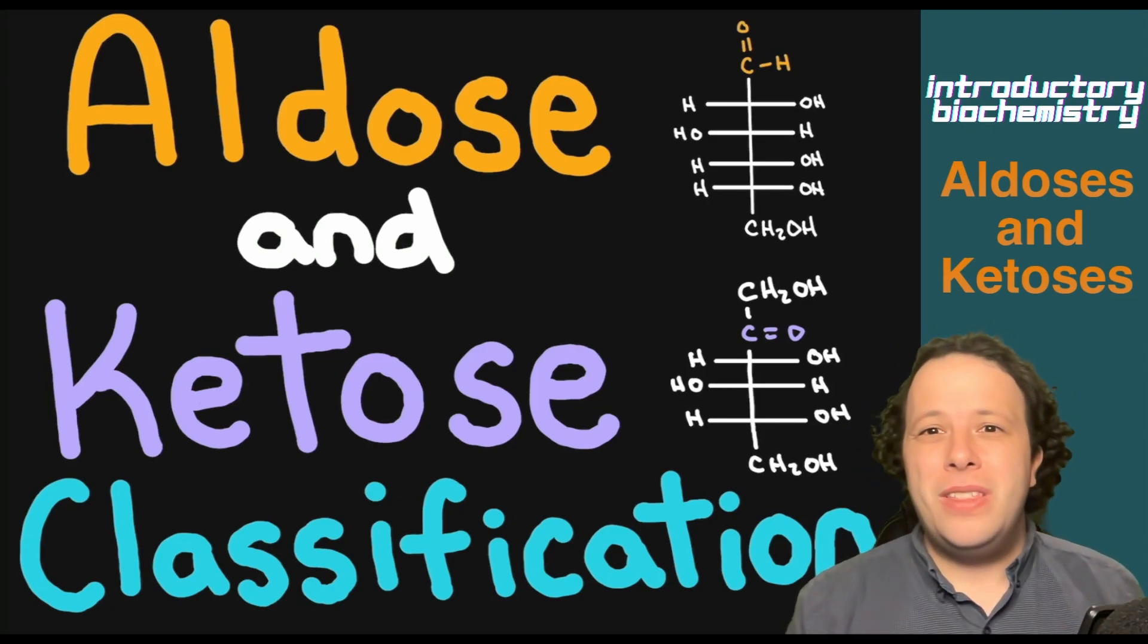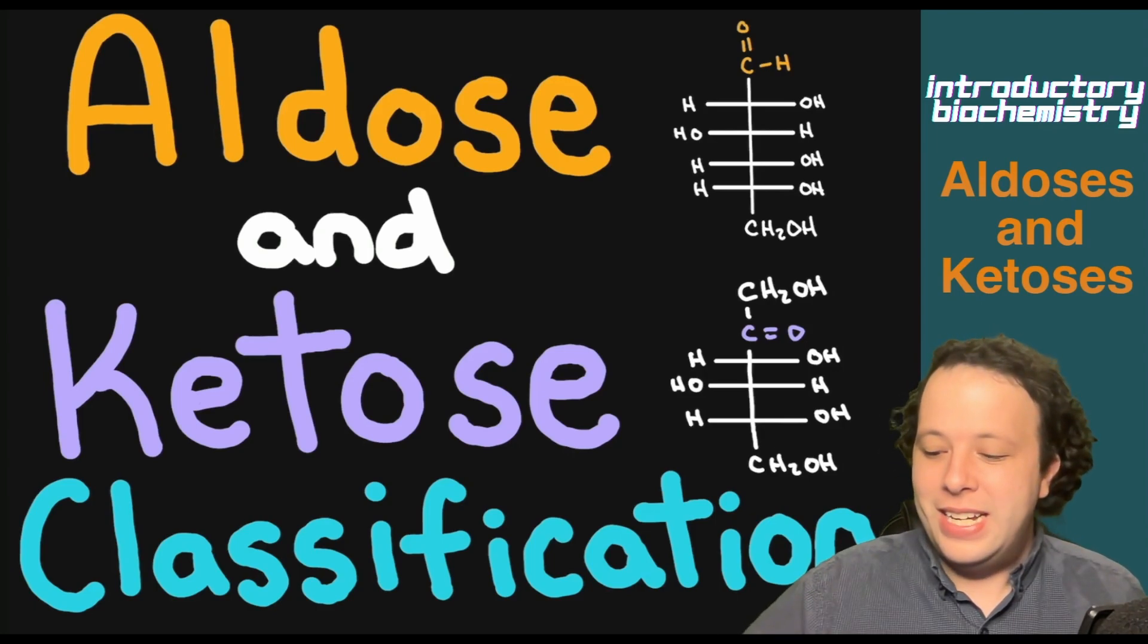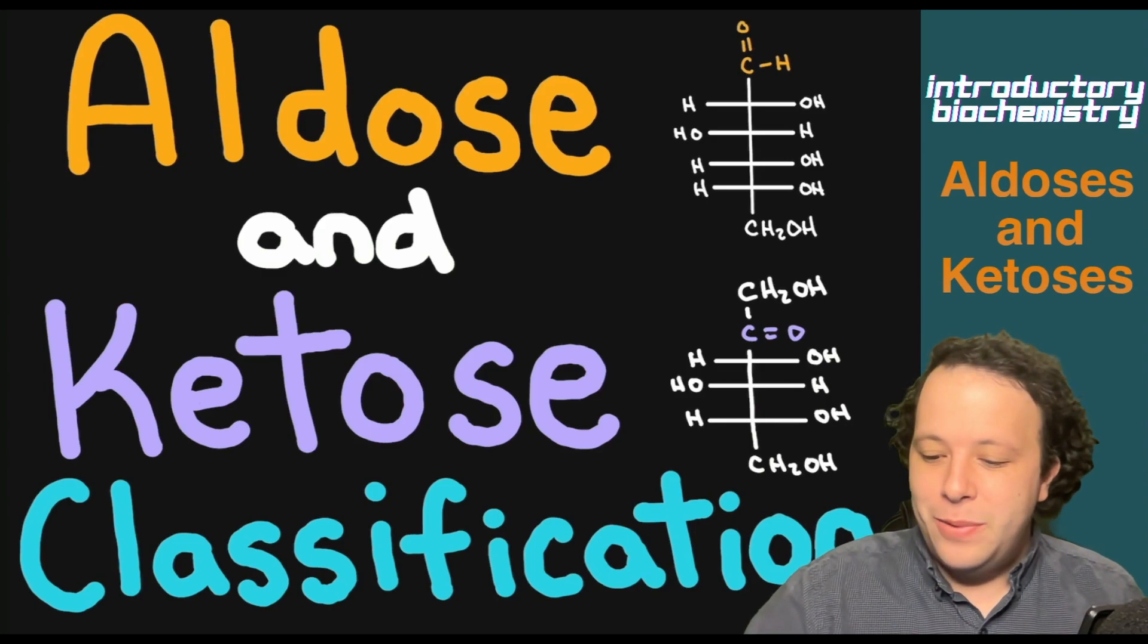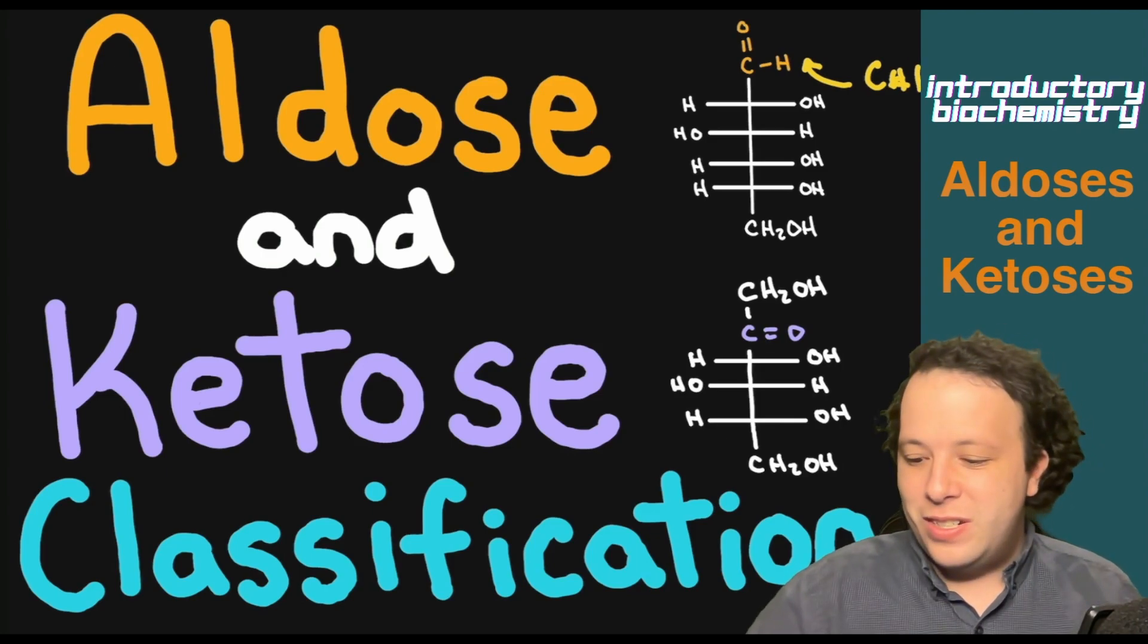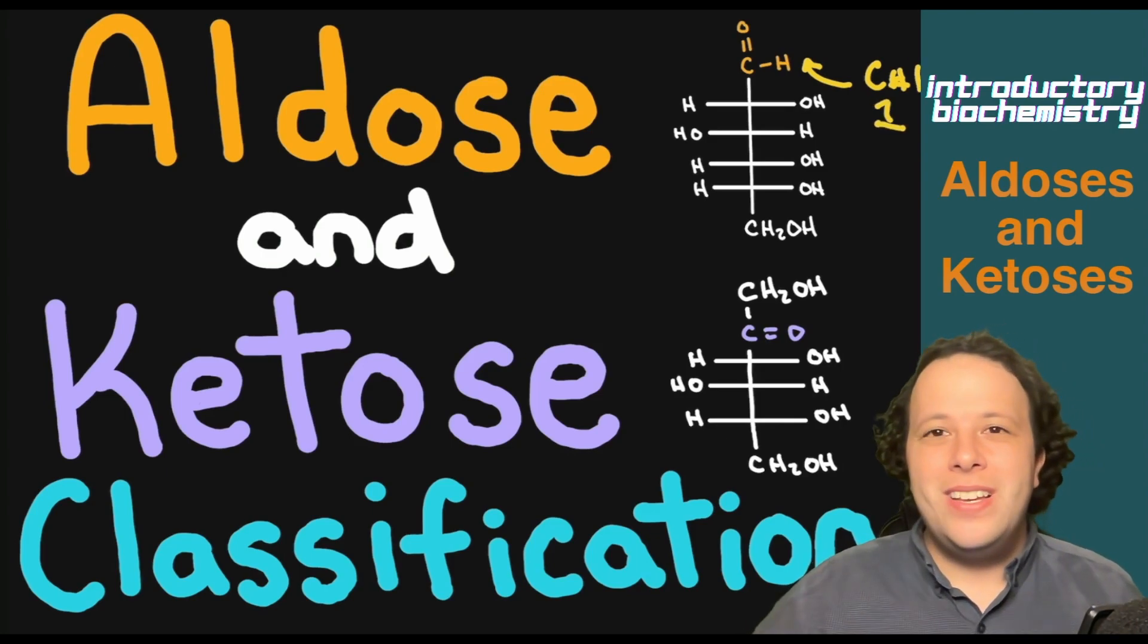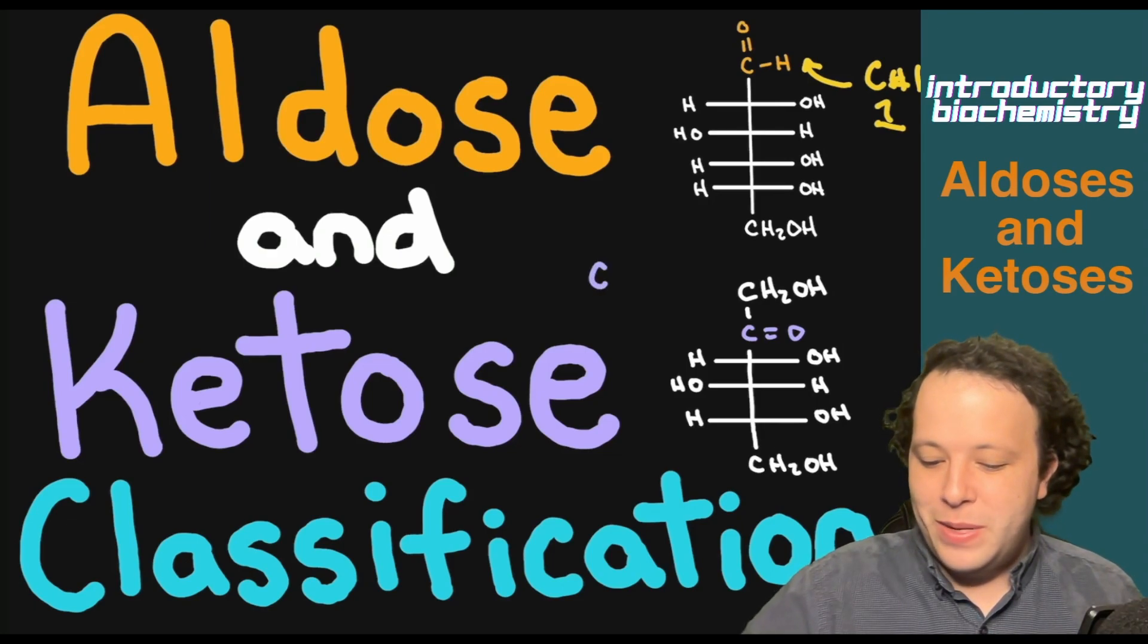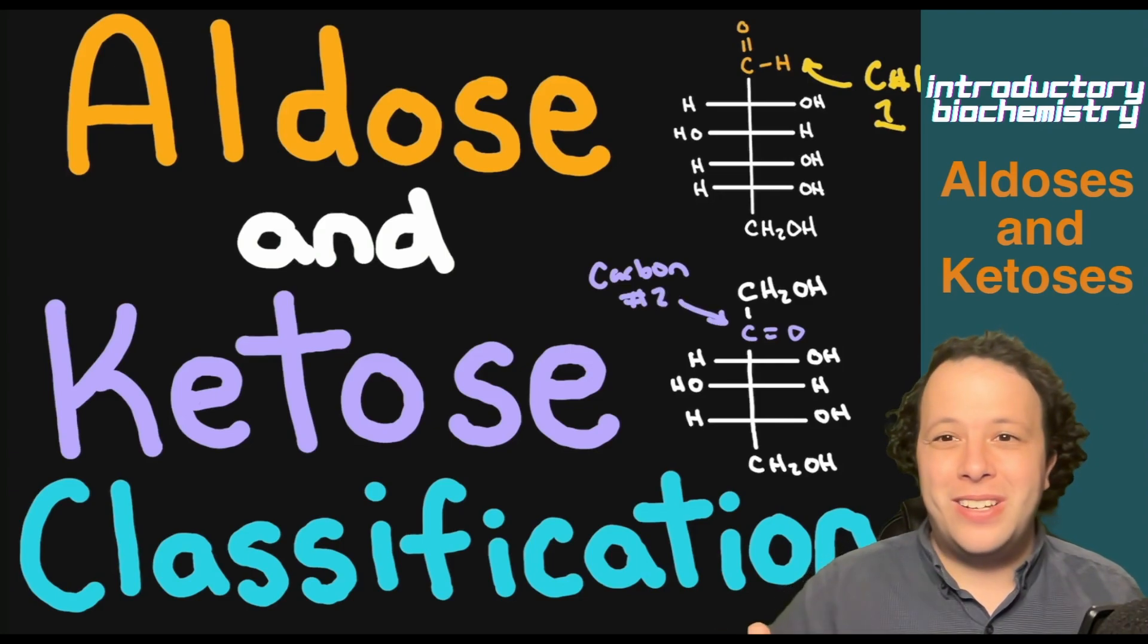With these, these are carbohydrates that have aldehyde and ketone groups. So whenever we are seeing an aldose, for the first example all the way up top, you can see that we have the aldehyde which is all the way on carbon number one for the first structure. And then for the ketone, we can see that on carbon number two, we always have our ketone with biomolecules.